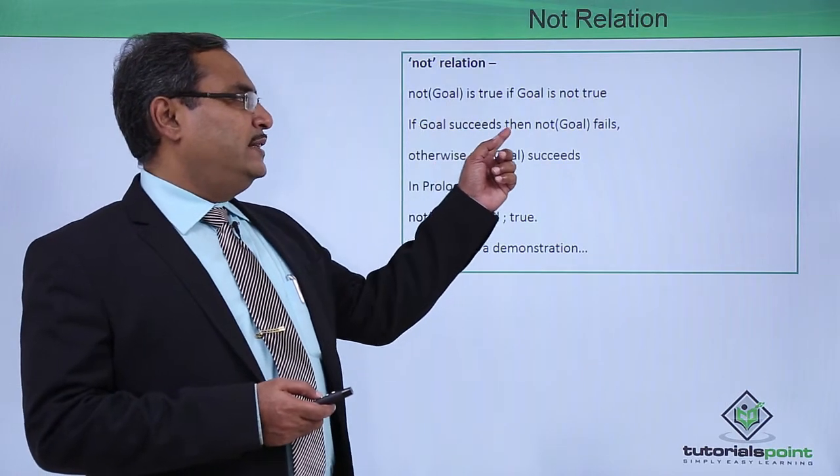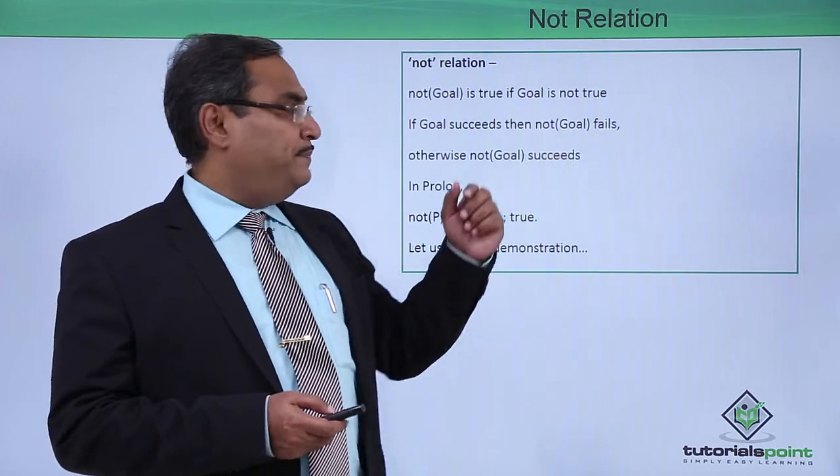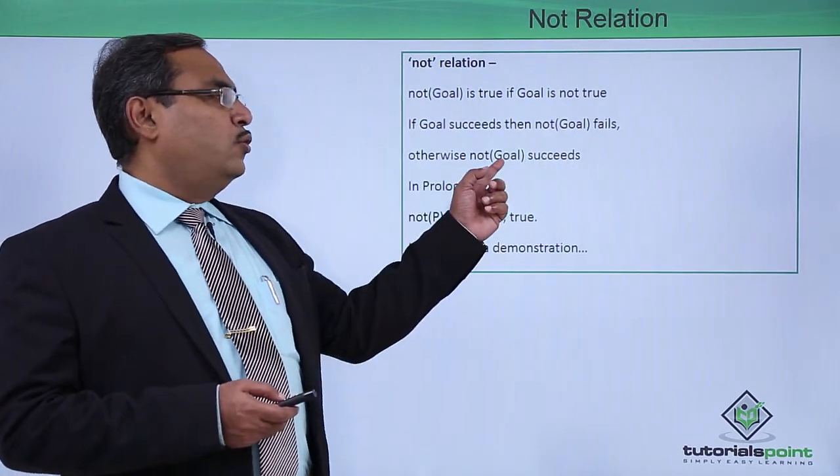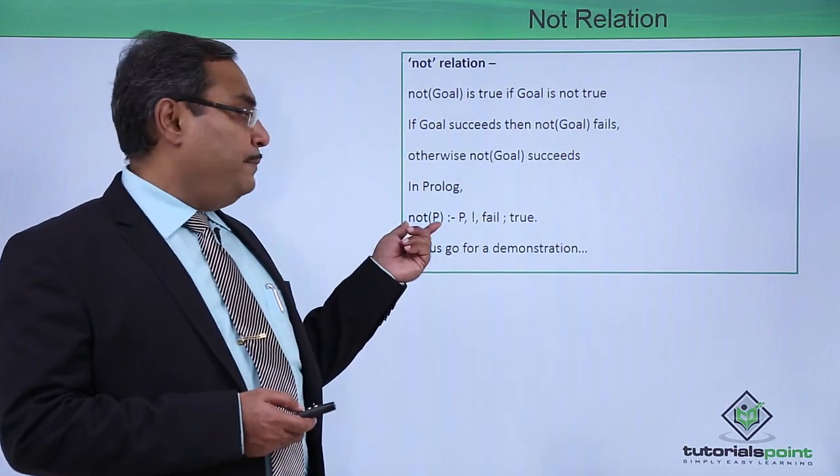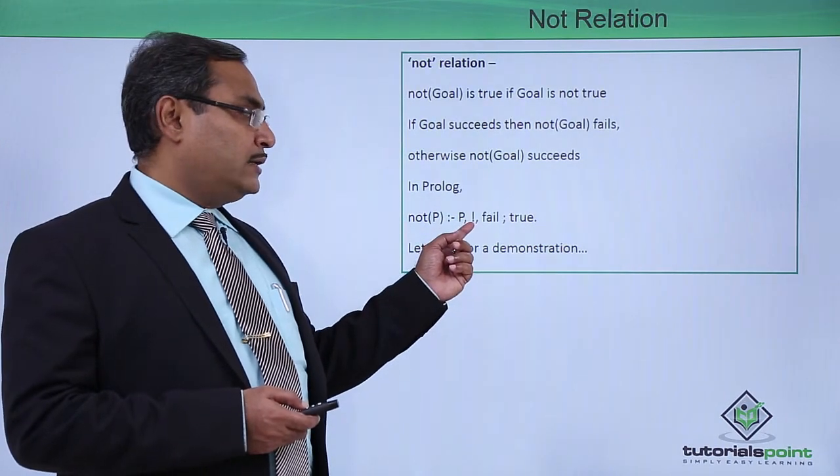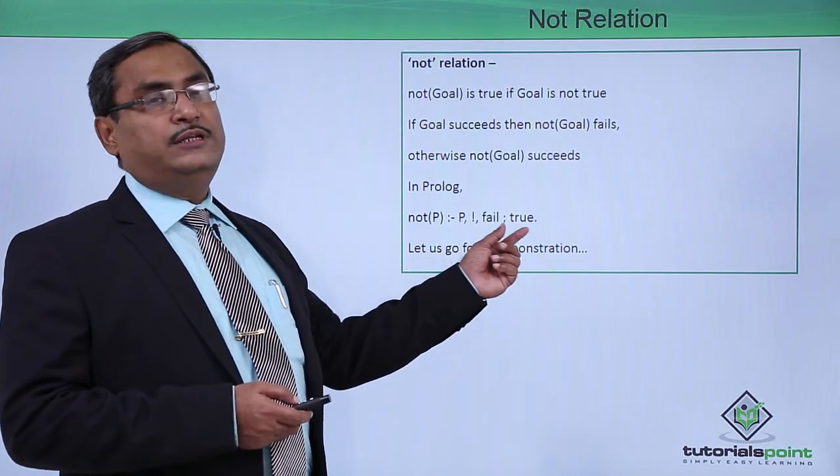If goal succeeds, then not of goal will fail. Otherwise, not goal succeeds. In Prolog, we can write not of p means p cut fail otherwise true.